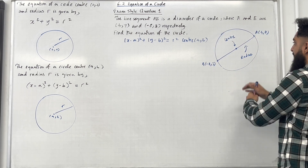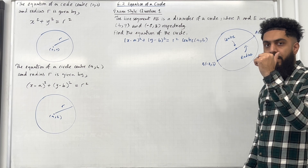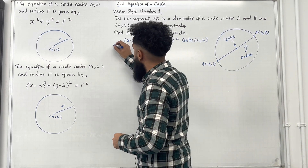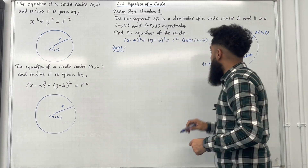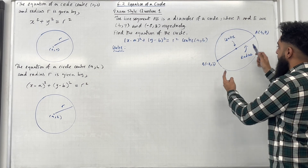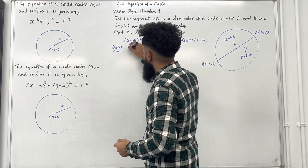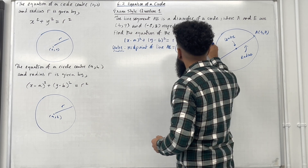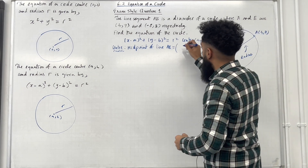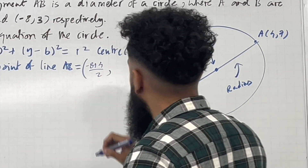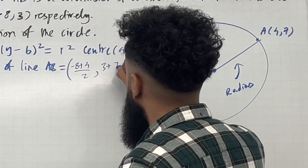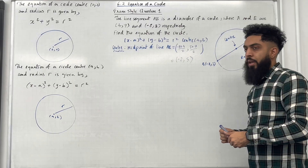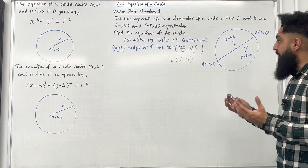To find the equation of the circle I need two key pieces of information: the centre of the circle, and the radius of the circle. Let's start with the centre. To find the centre of the circle, we want to work out the midpoint of the line segment A to B. Add the x-coordinates and divide by 2: minus 8 plus 4, divide by 2. Add the y-coordinates and divide by 2: 3 plus 7, divide by 2. This gives the coordinate (-2, 5).